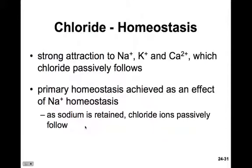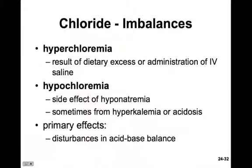Chloride has a strong attraction to sodium, potassium, and calcium, and passively follows them as they are actively moved. Its primary means of homeostasis is achieved as an effect of sodium homeostasis — as sodium is retained, chloride ions follow passively. Hypochloremia is often a side effect of hyponatremia, as chloride follows the lost sodium.